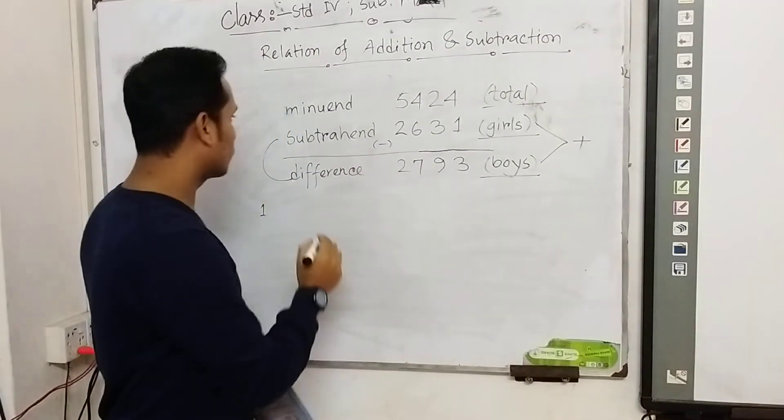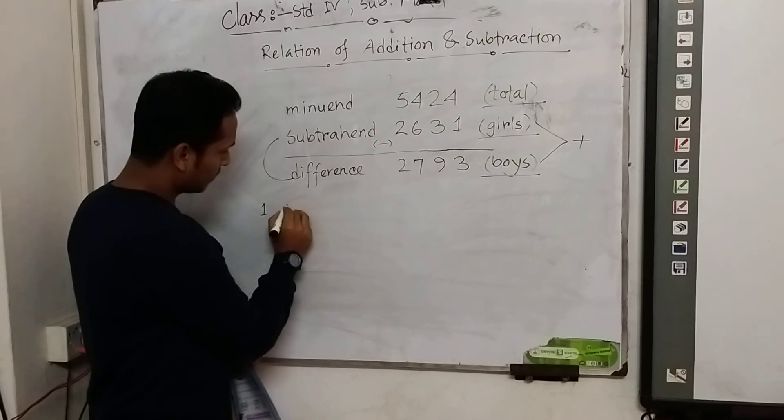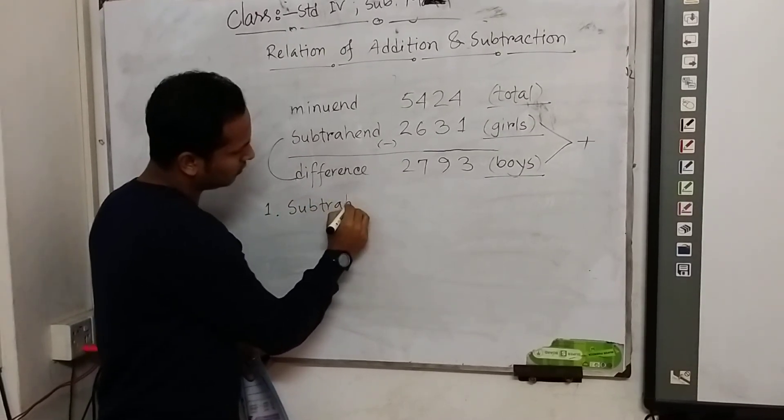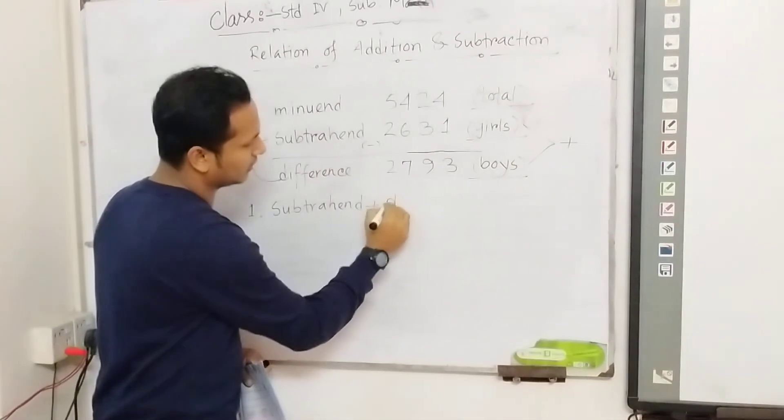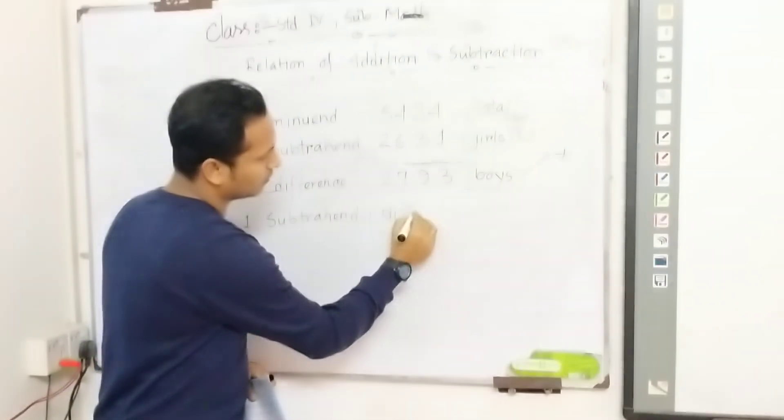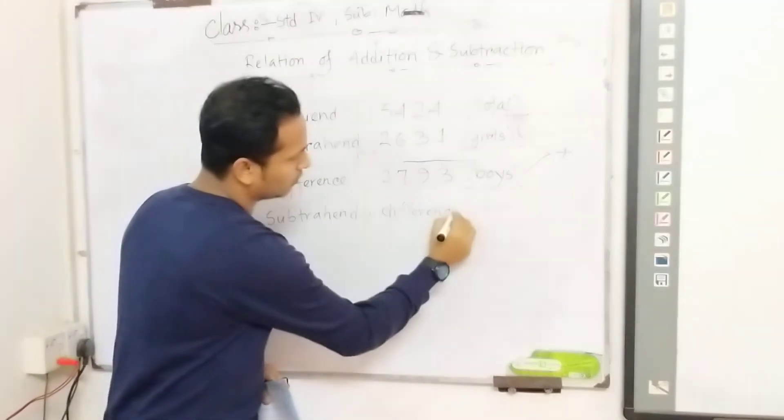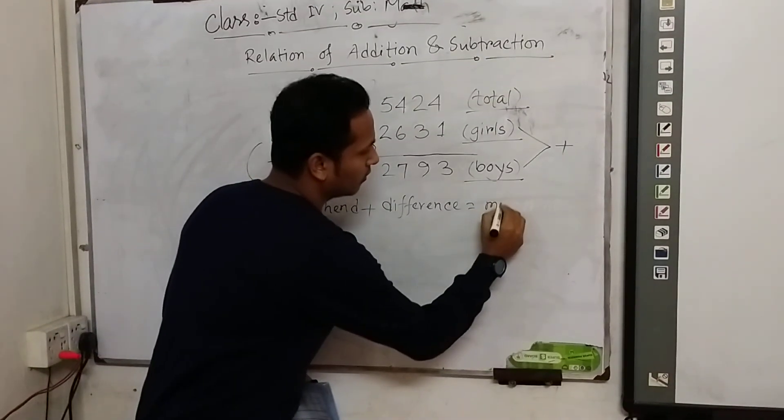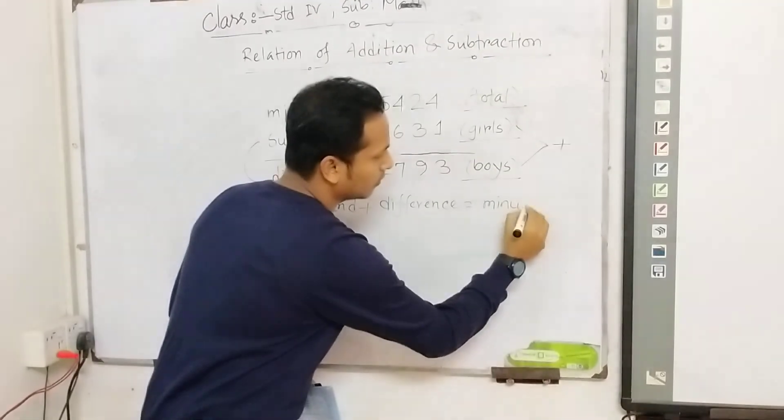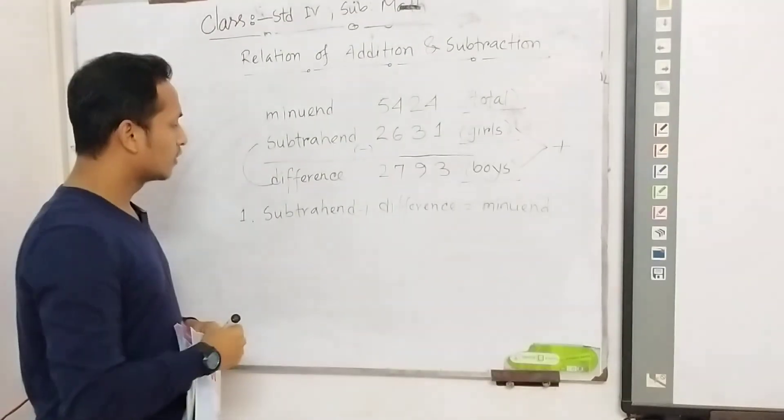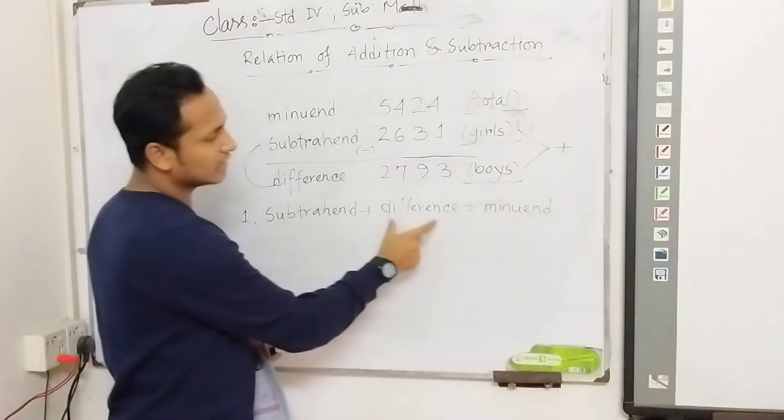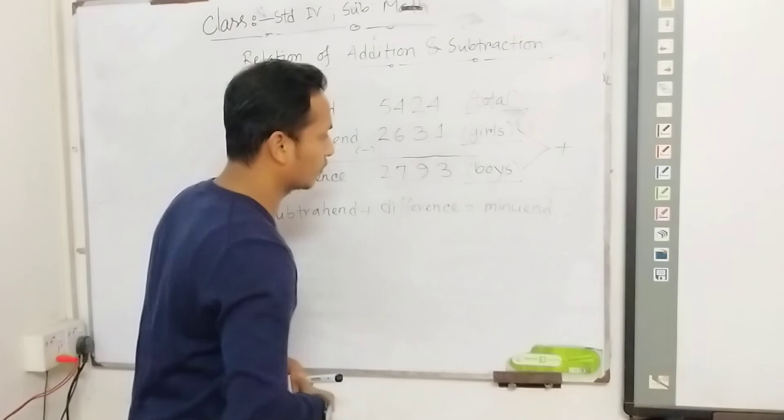Now the relation is: subtrahend plus difference equals minuend. That means first equation here, subtrahend plus difference equals minuend. So let's prove it.